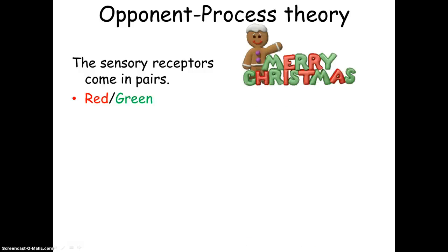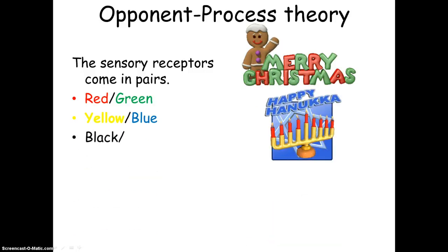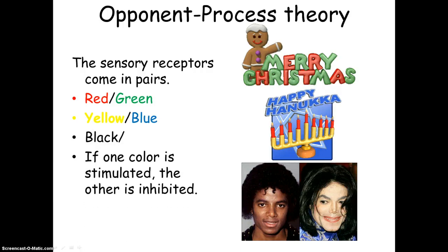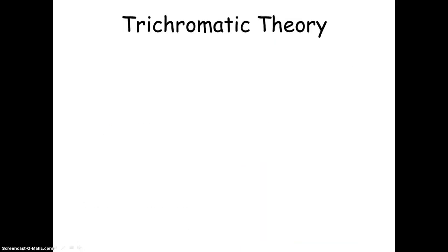Let's start with the opponent process theory. So this theory states that the sensory receptors come in pairs. There's a red-green pair, yellow-blue pair, and a black-white pair. And if one color is stimulated, the other is inhibited.